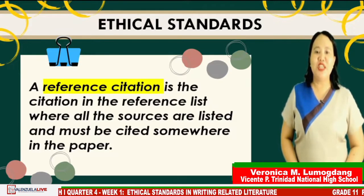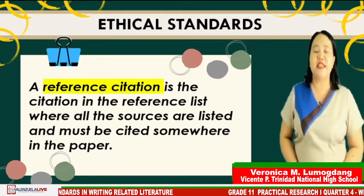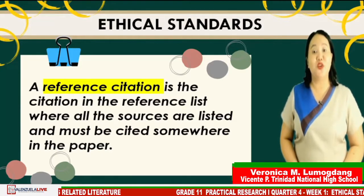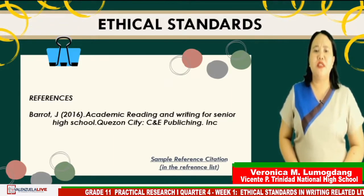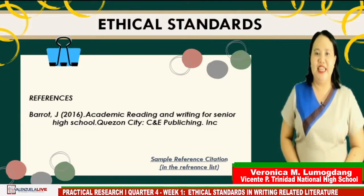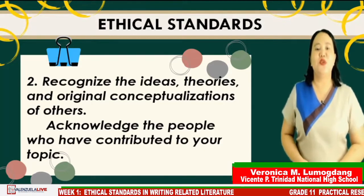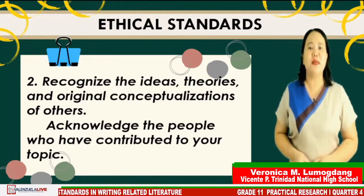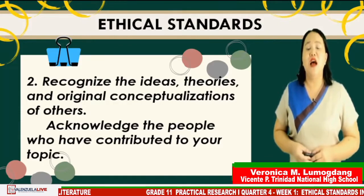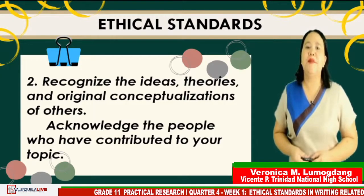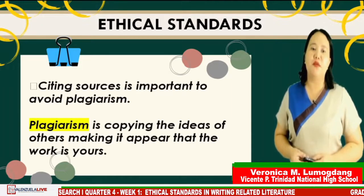Another form of citation is the reference citation. It is the citation in the reference list where all the sources are listed and must be cited somewhere in the paper. It goes together with the in-text citation. It is found in the reference list where all the references or sources are listed. Another ethical standard in writing literature is to recognize the ideas, theories, and original conceptualizations of others. We have to acknowledge the people who have contributed to our research topic or studies. Citing sources is important to avoid plagiarism and to achieve authenticity of our research.